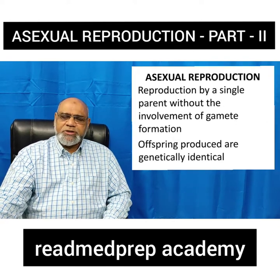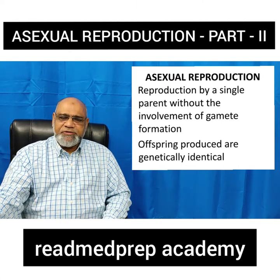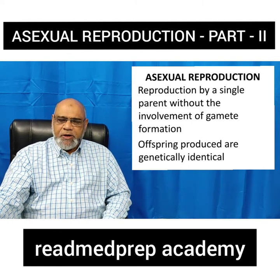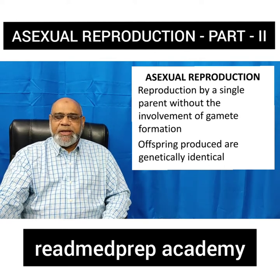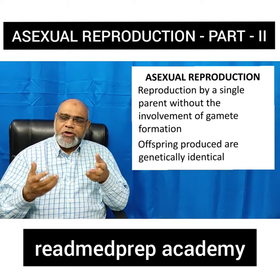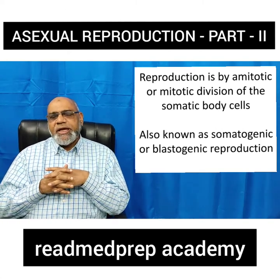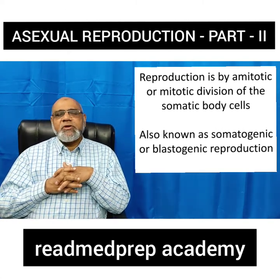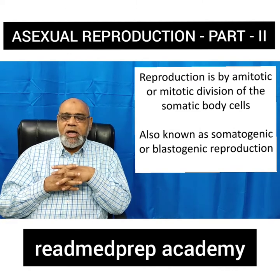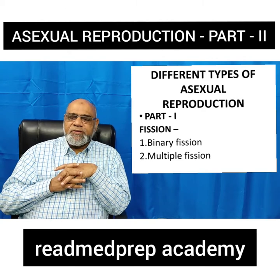What is Asexual Reproduction? We have already seen in Part 1 about the definitions and various differences between Asexual Reproduction and Sexual Reproduction. In Asexual Reproduction, the reproduction is by a single parent and there is no involvement of the gamete, and the offspring produced are genetically identical to that of the parent. The reproduction that occurs is by amitosis or mitotic division of the somatic body cells. This type of reproduction or cell division is called somatic or blastogenic reproduction.